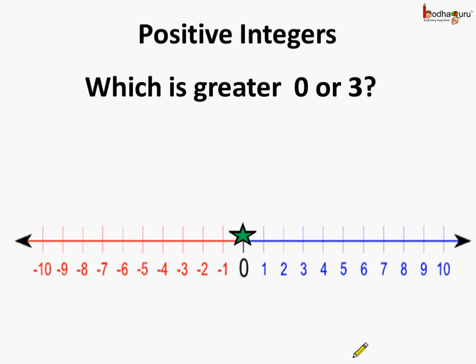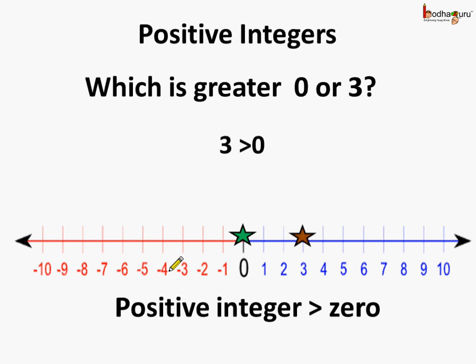Now, which is greater — 0 or 3? 3 lies on the right side of 0, so 3 is greater than 0. In general, we can say any positive integer is greater than 0.